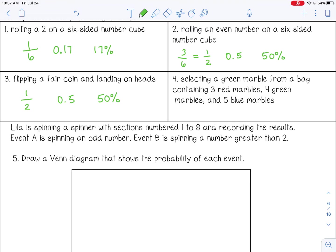Selecting a green marble from a bag containing 3 red, 4 green, and 5 blue. So we want green. There are 4 greens. And then we want to put that over the total amount of marbles. So 3 plus 4 plus 5 is 12. And then that will reduce to 1 third. As a decimal, that's 0.3 repeating. So 0.33, or 33%.